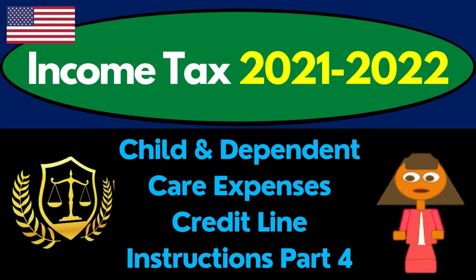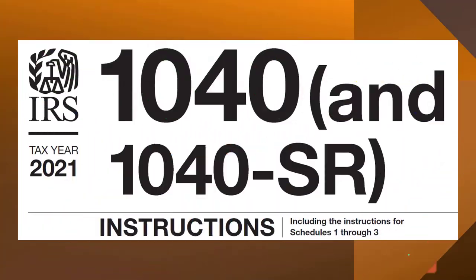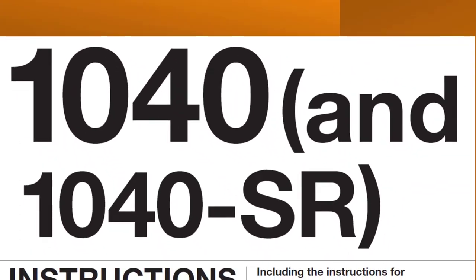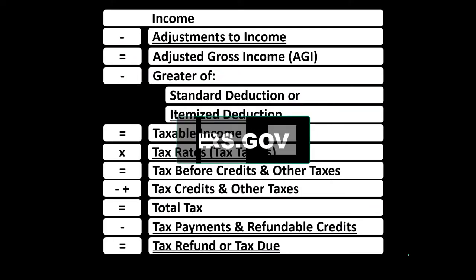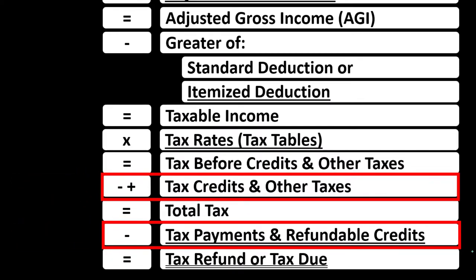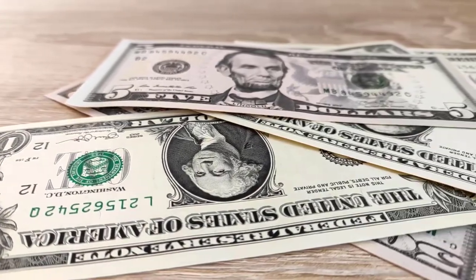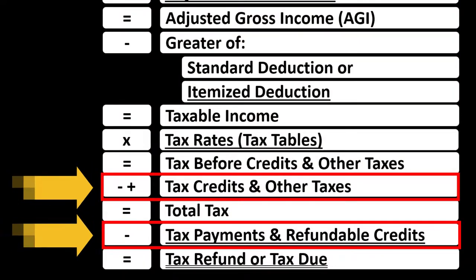Income Tax 2021-2022 Child and Dependent Care Expenses Credit line instructions, Part 4. Most of this information can be found in the Form 1040 Instructions Tax Year 2021 on the IRS website, irs.gov. Looking at the credits area — both credits and deductions are good, but a dollar credit is worth more than a dollar deduction. You get the full dollar's worth of credit, whereas a dollar deduction typically decreases taxable income, and the tax is then calculated on that.